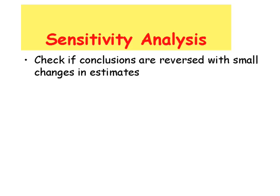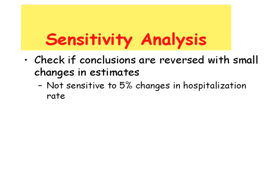It's important to do a sensitivity analysis to see if our conclusions are right or wrong. Sensitivity analysis is a process where we change one of the parameters of the decision tree to see if our conclusions are reversed. We started by changing the hospitalization rate by 5%. It didn't change any of our conclusions. Joining the PPO was still the preferred approach.